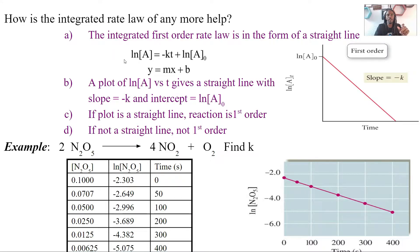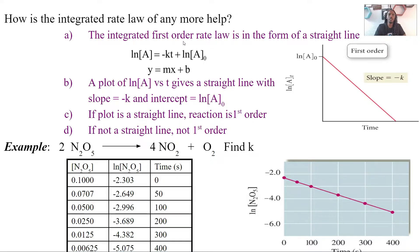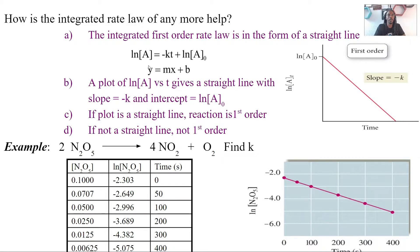For first order, the integrated rate law always looks like this: ln[A] = -kt + ln[A]₀. This can be related to y = mx + b, which is just a linear equation — a straight line. Because of this relationship, ln[A] can be our y-axis, which we plot our data on, and t will be our x-axis.